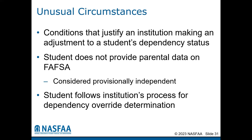If the school determines that the student does not meet the eligibility criteria for the dependency override, the student will either only be eligible for a direct unsubsidized loan or will need to provide parent information on the FAFSA. A dependency override simply cannot be done because the parents refuse or do not want to consent to submit FAFSA data. A student's dependent or independent status is not determined based on who is going to pay for the student's education, but represents a student's living and family situation.